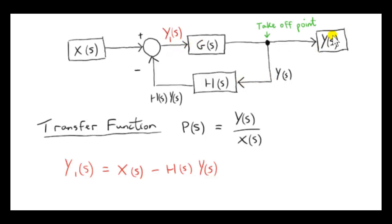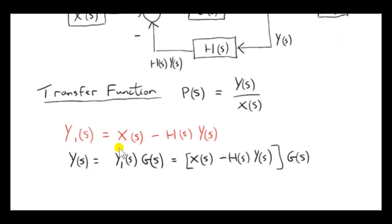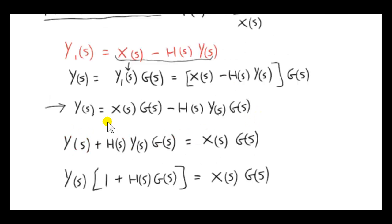Now we can see what y(s) is. y(s) is y1(s) multiplied by G(s) in this block here. So we just plug all of this in for y1(s). Now we have to rearrange this equation to get y(s) divided by x(s). We can take this term over to the left-hand side and factorize y(s) out of the left-hand side.